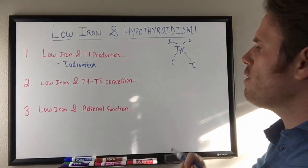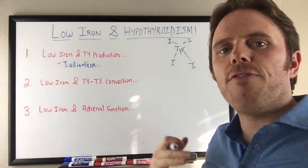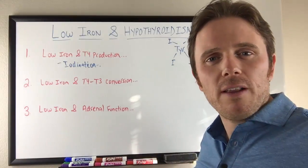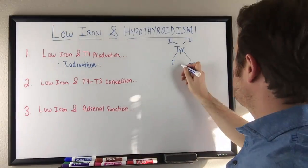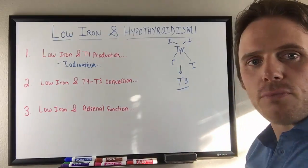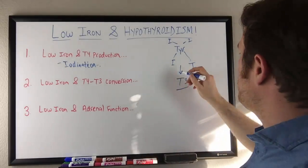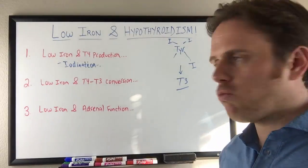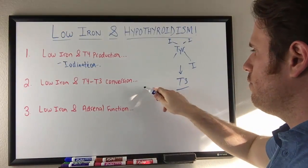Low iron and T4 to T3 conversion is also really important because iron is also part of the 5-deiodinase enzyme as well. So we have selenium as part of that enzyme, but iron plays a role of coming in here and actually converting this molecule of T4 to T3. And how it does that is it comes in here like this and actually going to play a role at knocking that off. Selenium also plays a role with that too. So low iron and T4 to T3 conversion, very important.